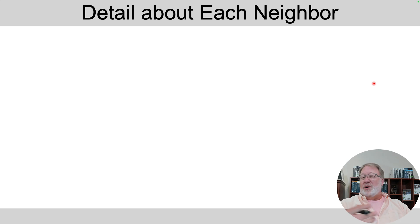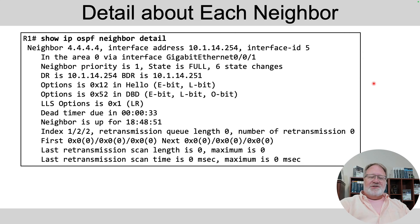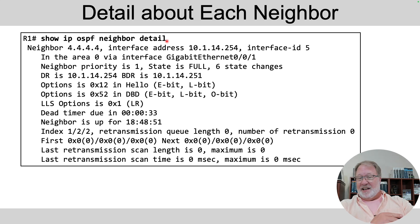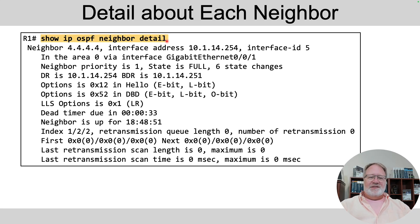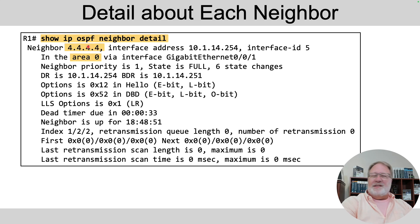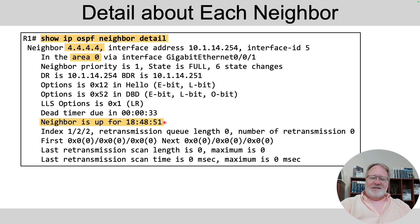If you want more detail about a neighbor, do show IP OSPF neighbor with the detail option. Then you get a stanza like this for every neighbor with lots of information — the area number (in this case everyone's in area zero), the neighbor's router ID, a notation for how long the neighbor relationship has been up, and other details.